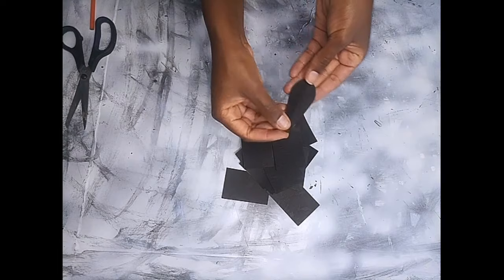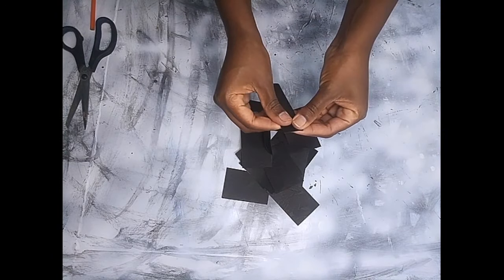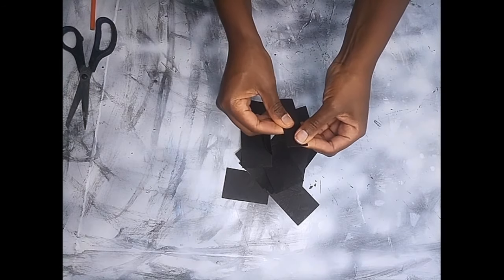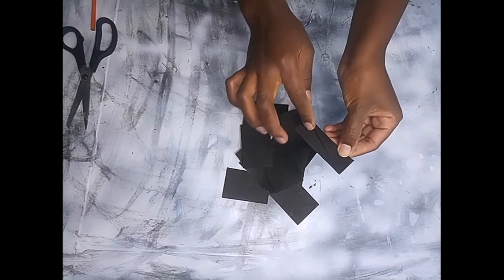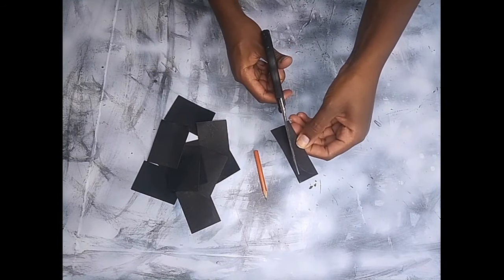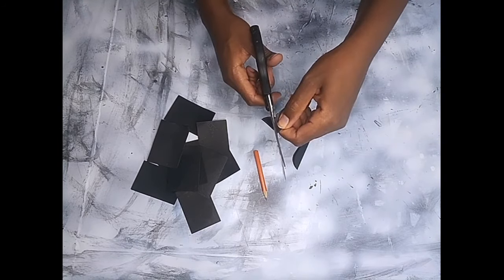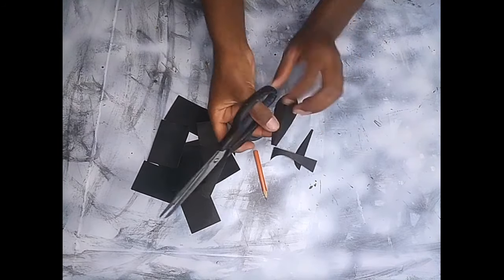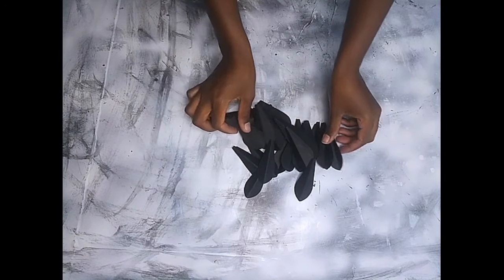I'll be using these strips to make the decorations for the wall clock. This is the template that I'll be using to make the decoration that I need for this project. I'll trace down on each and every strip and cut it down using a pair of scissors. I made 60 pieces for this project.